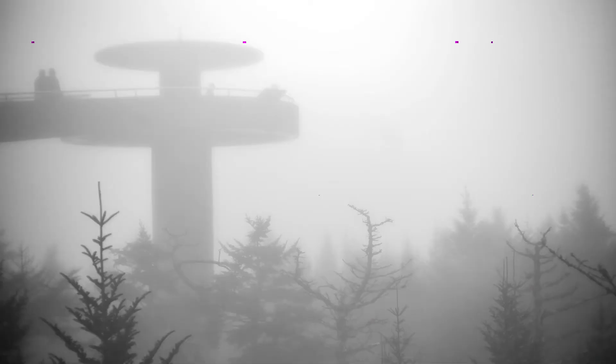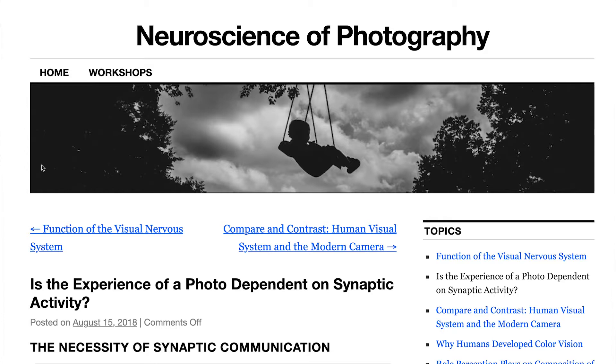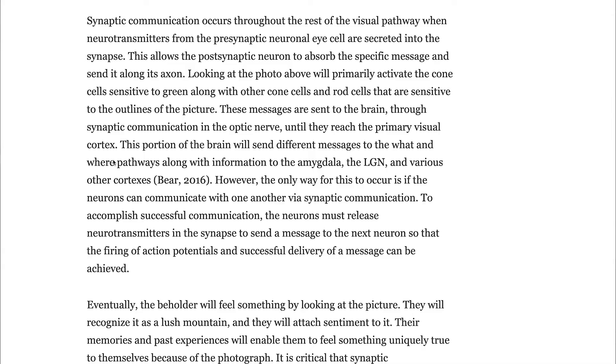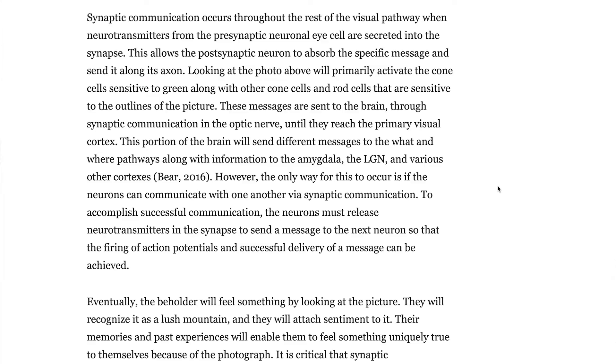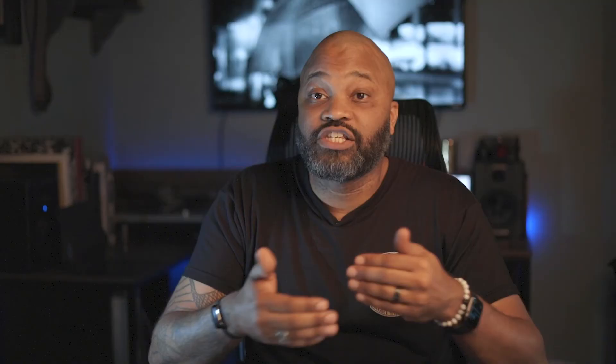Further, at the Neuroscience of Photography blog from the University of Richmond, a 2018 article asked: is the experience of a photo dependent on synaptic activity? It states that every feeling we have about a particular image — be it awe, excitement, sadness, whatever emotion — are all biological synaptic communications between neurotransmitters. As these synaptic activations occur, they cause the limbic pathway to activate, causing emotions to happen. As a person looks at an image, they may start to feel some type of sentiment from that limbic pathway, and through the firing of action potentials inside the brain, the viewer will eventually associate some type of emotion with that image.